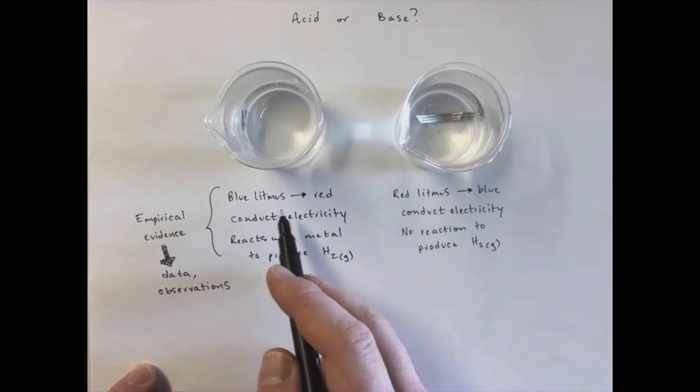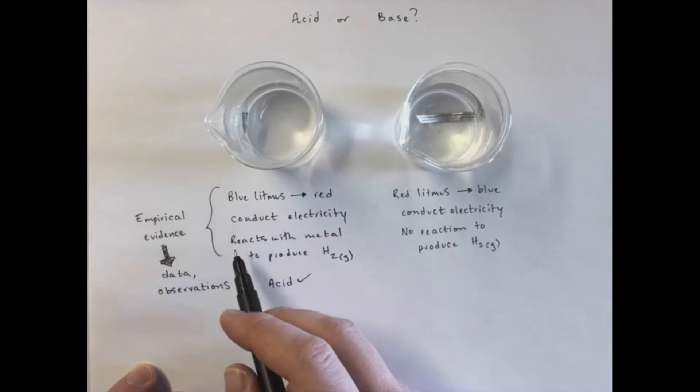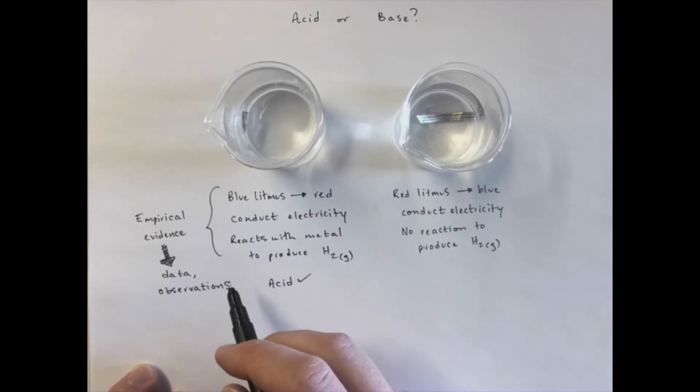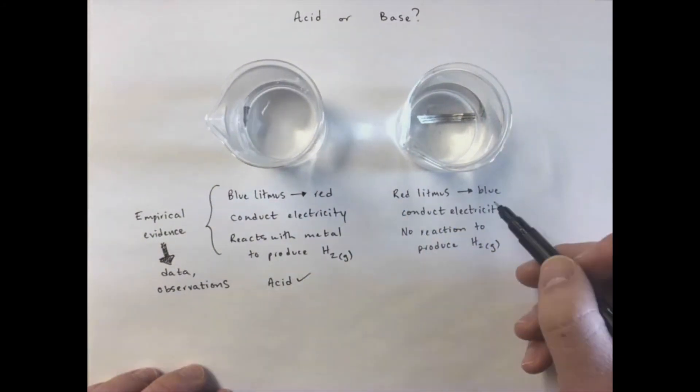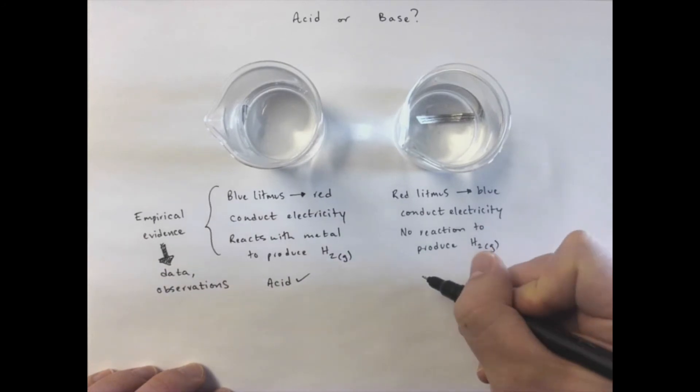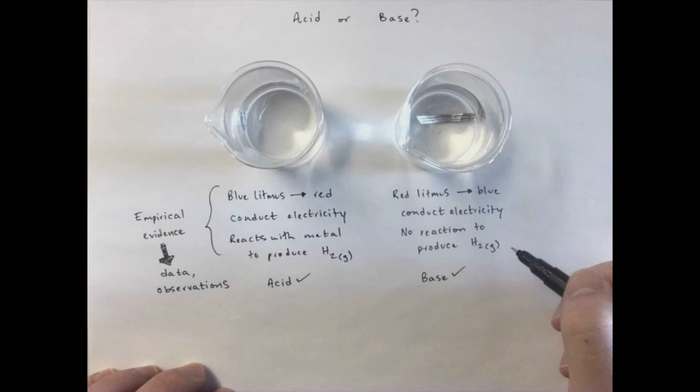They turn blue litmus paper red. They can conduct electricity. They react with metals to produce hydrogen gas. And bases tended to turn red litmus paper blue. They conducted electricity, but they didn't have any sort of reaction to produce hydrogen gas.